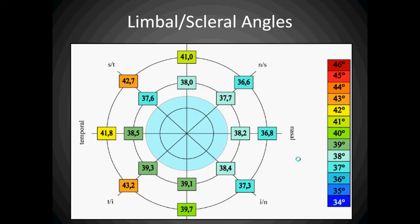When measuring the angles at the 15mm cord diameter, the inner circle, and at the 20mm cord diameter, we can see that the eye is fairly symmetrical in angle around the clock at the 15mm cord — there is approximately 1.7 degrees of differential. However, at the 20mm cord, the outer ring, the eye has far more asymmetry: 6.6 degrees of differential around the clock on the sclera.